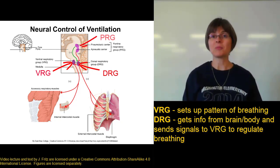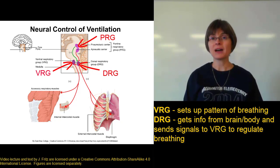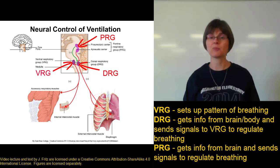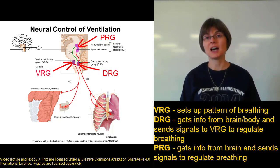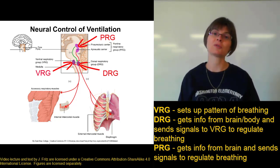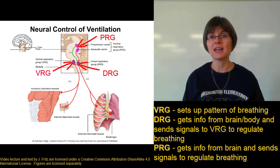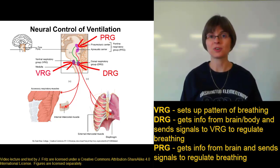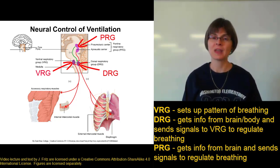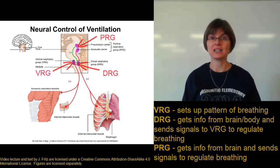We also talked about the pontine respiratory group. The pontine respiratory group gets information from the brain, specifically from areas like the hypothalamus, the limbic system, which controls emotions, and from the reticular formation, which controls alertness. It integrates that information and then sends signals to both the dorsal respiratory group and the ventral respiratory group. So these three respiratory groups are all involved in breathing.